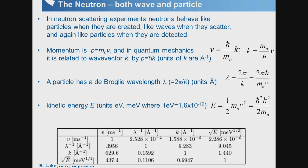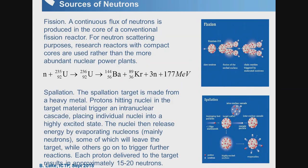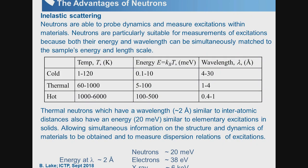I told you about the energy of the neutron — the kinetic energy is related to the velocity, which is related to the wave vector and wavelength. The neutron has two ways to interact with a sample: it can interact by the nuclear force, seeing the nuclei within a material, and it can also interact via its magnetic moment to see the electrons. The neutron can be produced in a nuclear reactor and also in an accelerator.